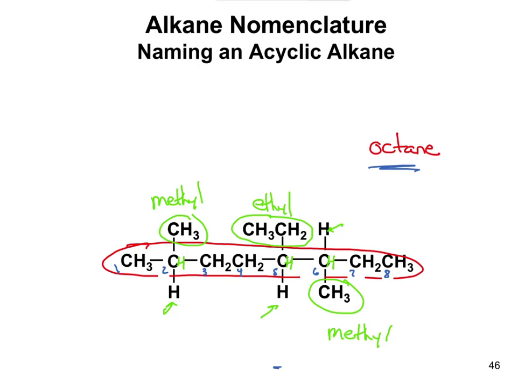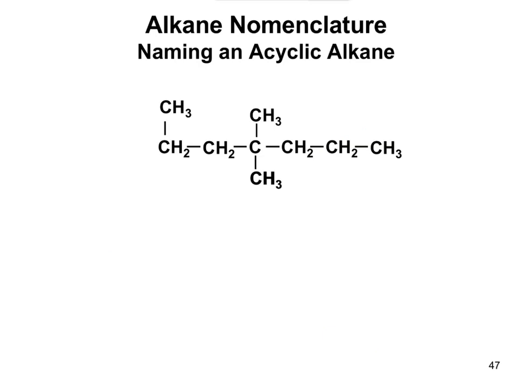Now that we have both an ethyl and methyls, we have to alphabetize. Ethyl comes before methyl, so we start with 5-ethyl, then because there are two methyls we write 2,6-dimethyl. The final name is 5-ethyl-2,6-dimethyloctane.